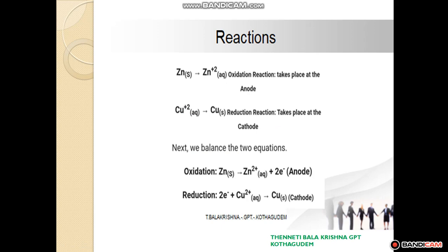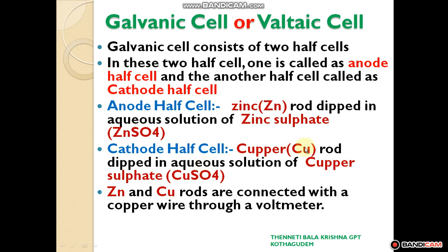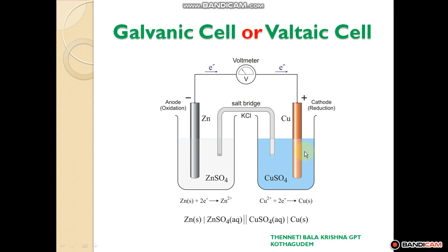Now, the working principle. The zinc and copper rods are connected with a copper wire through the voltmeter. Oxidation takes place in the zinc half-cell. Why? Because zinc is more reactive than copper, so zinc tends to lose electrons more rapidly. Losing electrons is called oxidation, so oxidation takes place in the zinc part.